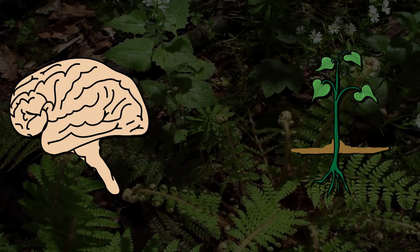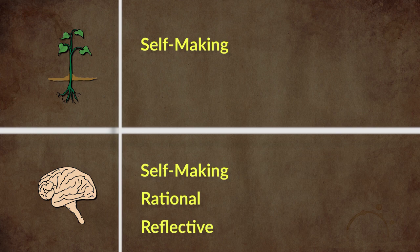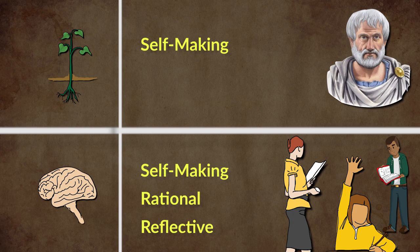Unlike the plant, we are not only self-making, but we are also rational and reflective. We are capable of deliberately cultivating our own character like other organisms cannot. That is what Aristotle believed was our ultimate purpose, to cultivate virtue and regulate the growth of our character so we can actualize our potential in the fullest possible way.